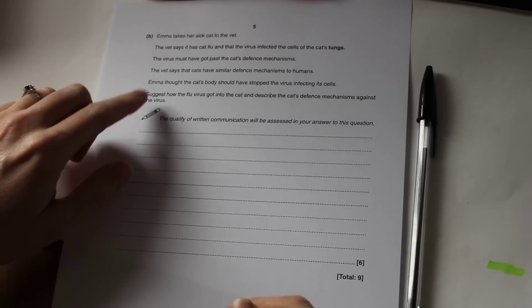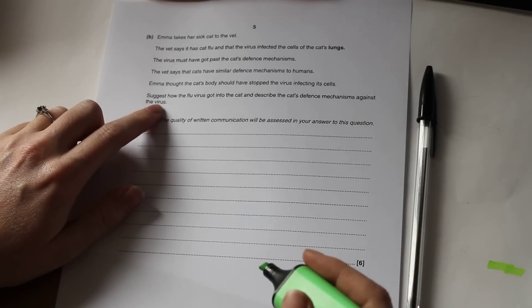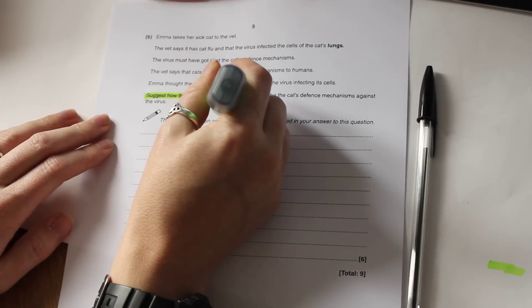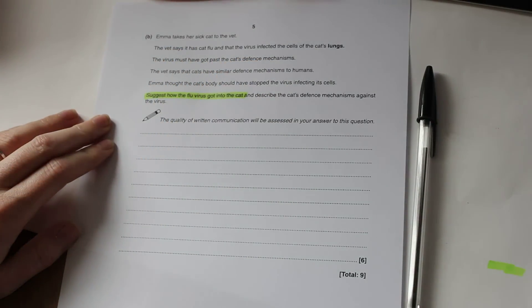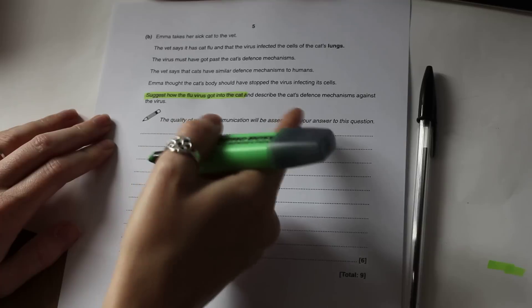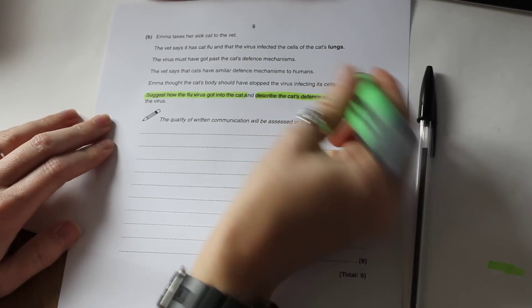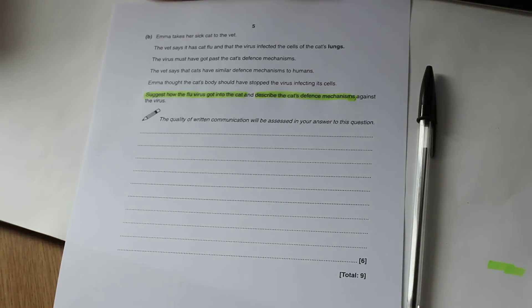So what we're going to do first of all is have a read of this last sentence here again. Suggest how the flu virus got into the cat. That's our first thing. So let's highlight that. And then the second thing we need to talk about in our answer is to describe the cat's defense mechanisms. So they're the two things that we actually need to talk about when we put our answer together.